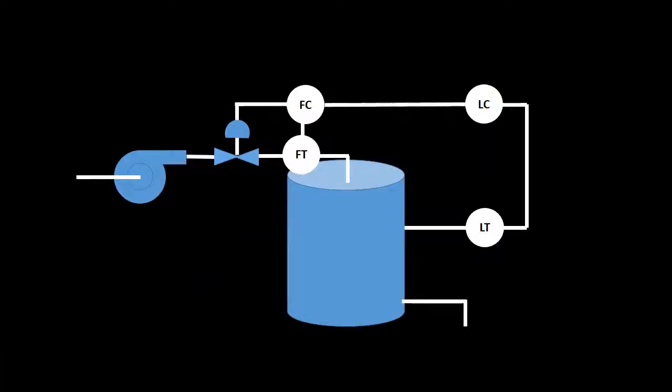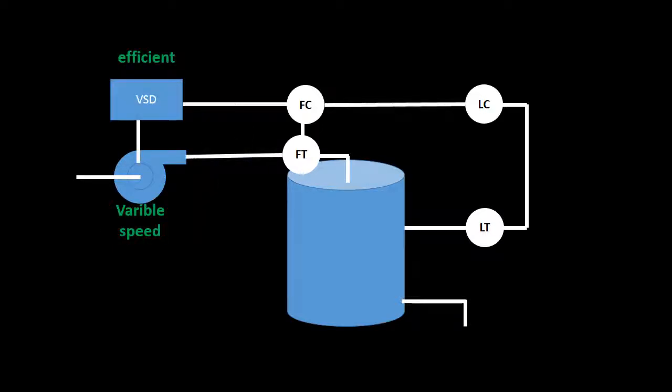In a typical pumped system, the flow is controlled with a valve. The valve lowers the system efficiency by creating heat and noise. A more efficient alternative in this scenario is to control the flow directly at the pump by using a VSD and doing away with the valve.